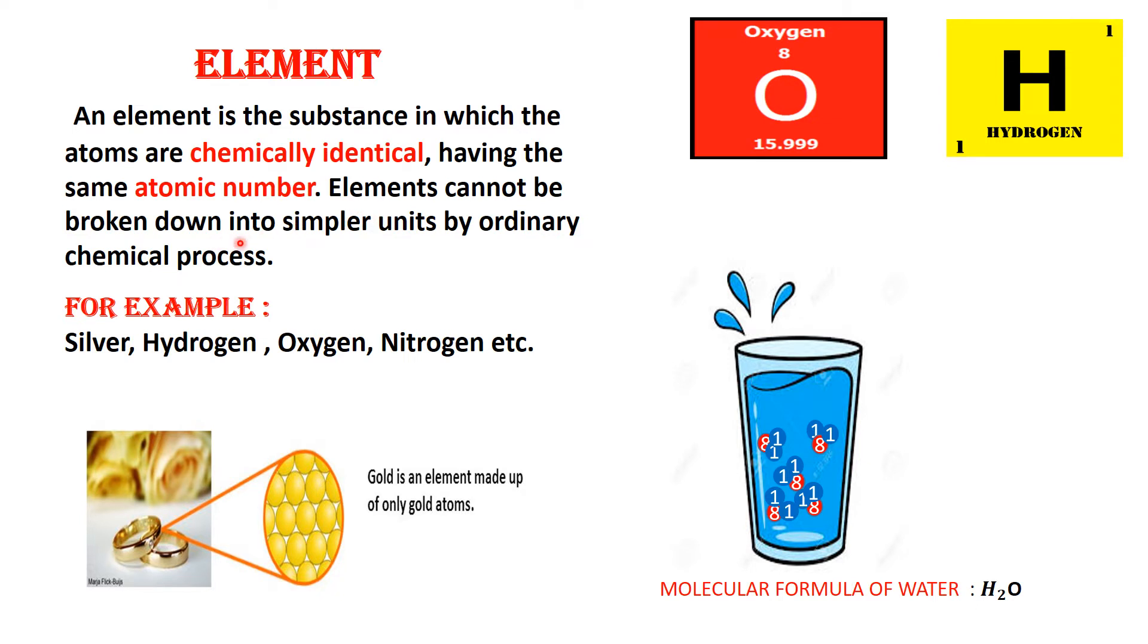Elements cannot be broken down into simpler units by ordinary chemical process. In simple words, an element is a substance that is made up of the same kind of atom. For example, the element silver is made up of only silver atoms. The element hydrogen is made up of only hydrogen atoms.